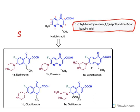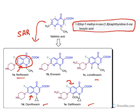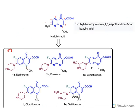With structural activity relationship studies, new drugs were developed from nalidixic acid. In the majority of drugs like norfloxacin, lomefloxacin, ciprofloxacin, and gatifloxacin, the nitrogen is removed from the naphthyridine ring. Without nitrogen, this ring is known as quinoline. Additionally, for all these compounds, a fluorine substitution is present — hence these drugs are known as fluoroquinolines.